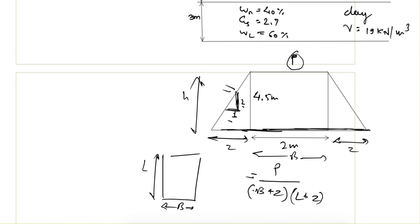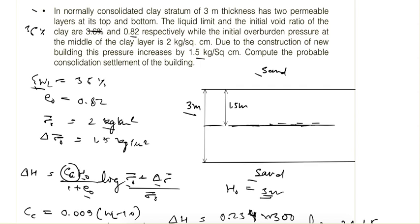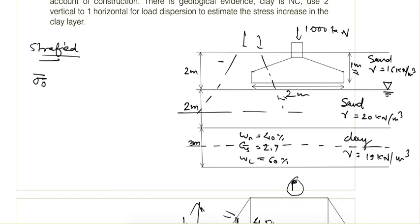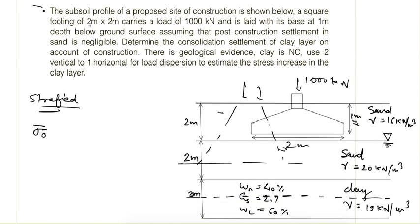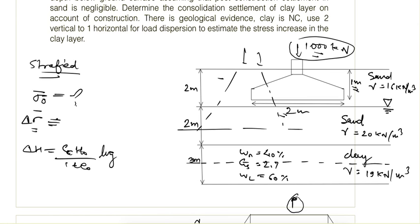Apart from this, there will be some initial stress due to overburden. When asked such a question, load dispersion is applied up to the middle of the clay layer — as in the previous problem, data was given for the middle of the clay layer. We always calculate the increased stress at the middle of the clay layer, then apply the formula: delta H = CC × H0 / (1 + E0) × log((sigma naught + delta sigma) / sigma naught).